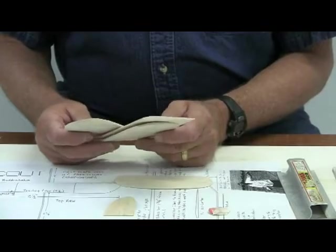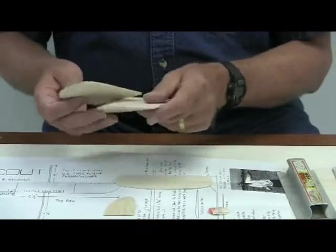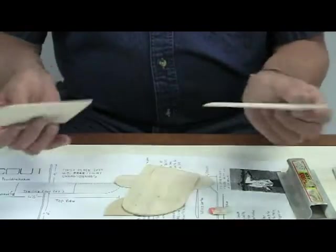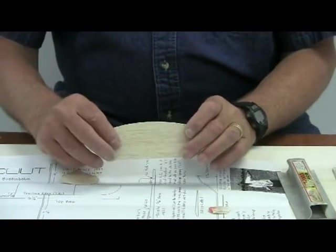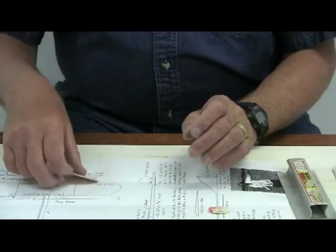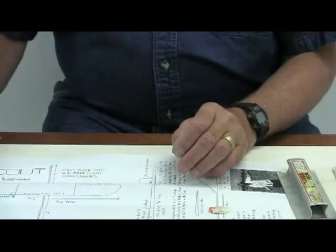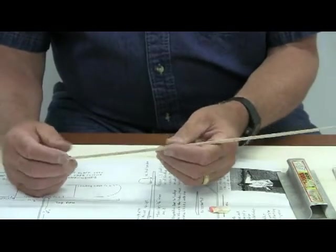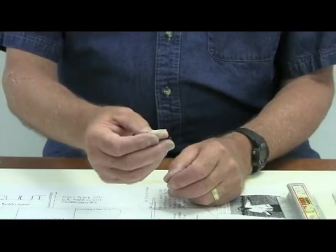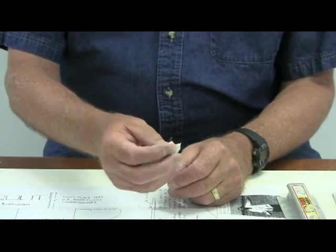When you receive the Scout kit, you'll notice that it comes with the wing, which is in three parts. One, two, three. It has a stabilizer. It has a fin. It has a fuselage, which is marked top, and it has a weight attached to the fuselage. And there are some additional parts that come wrapped up in a piece of tape.